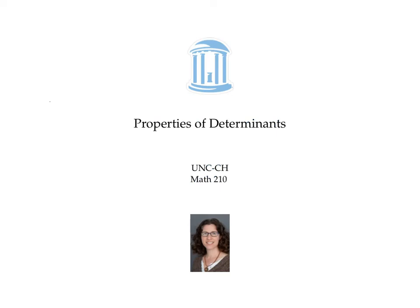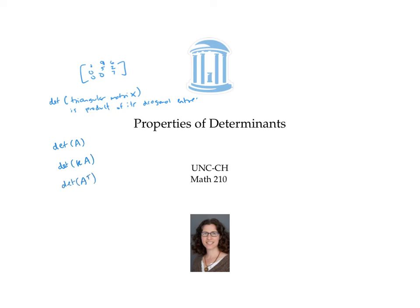In summary, this video found that the determinant of a triangular matrix is the product of its diagonal entries; established ways to relate det(A) to det(kA), det(A transpose), det(AB), and det(A inverse); and stated the key fact that a matrix A is invertible if and only if its determinant is not zero.